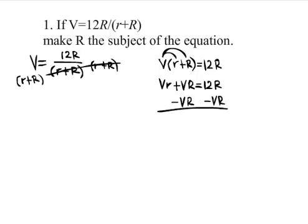Subtract V times capital R from both sides which will give you Vr equals 12R minus VR. Since both of these terms have R in common, you factor it out and that will give you Vr equals R times 12 minus V.